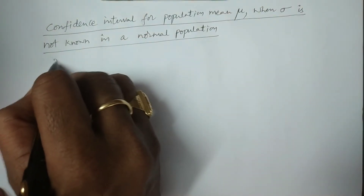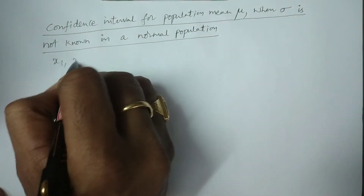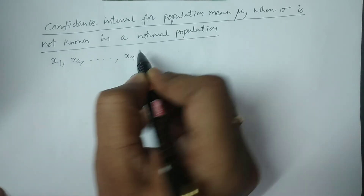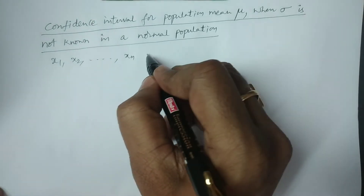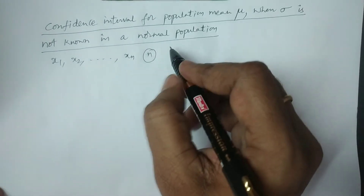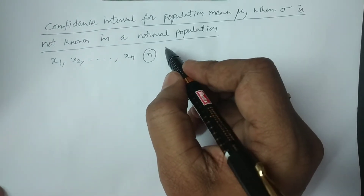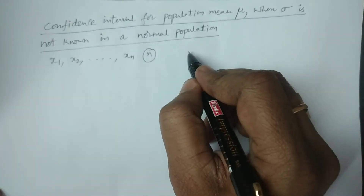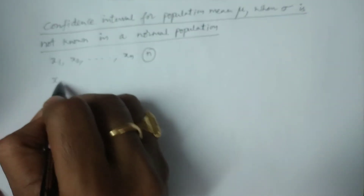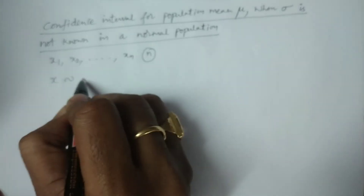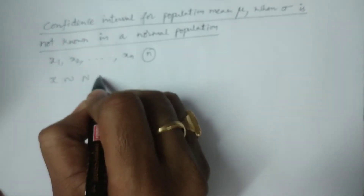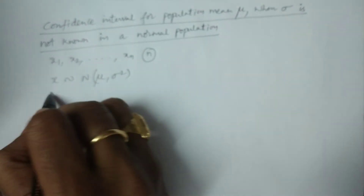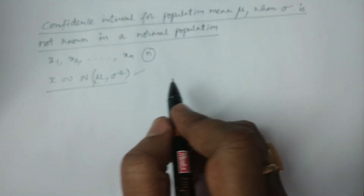For example, consider X₁, X₂, ..., Xₙ to be a random sample of size n drawn from a normal population with mean μ and variance σ². That is, X follows a normal distribution with mean μ and variance σ². This is the first statement we consider.